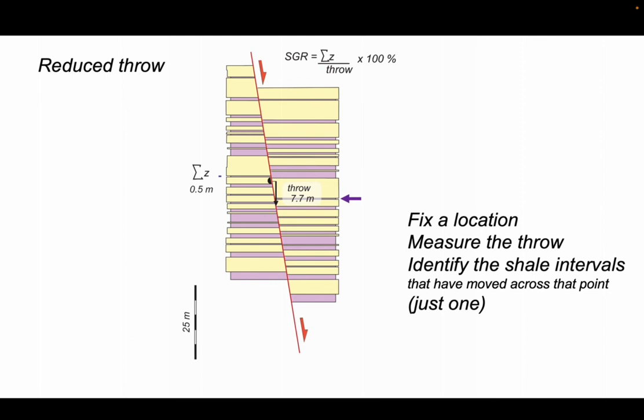So we have our two values, the sigma z and throw. We can plug these into our expression and we find that the SGR for this point on the fault is just 6.5%.